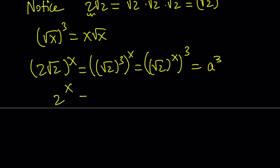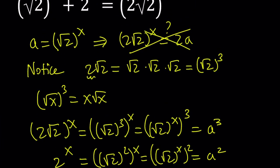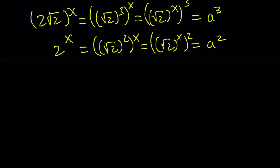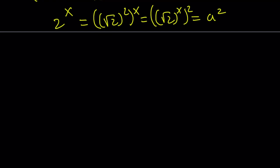And similarly, 2 to the power x can be written as square root of 2 squared to the power x. And that is the same thing as square root of 2 to the power x to the power 2. And that is a squared. So by making this substitution, which is a equals square root of 2 to the power x, we're able to simplify this and actually turn it into a polynomial equation, which is obviously a lot easier to solve.